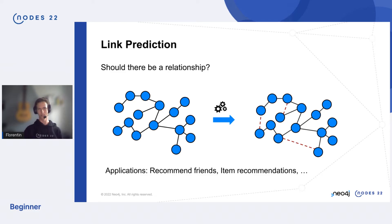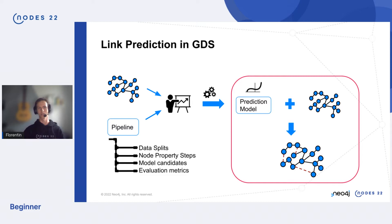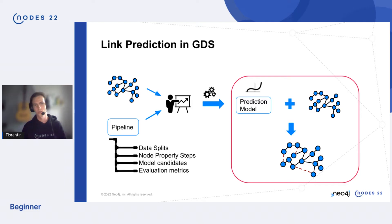In the Graph Data Science context, on the left side we have our input graph. Then we have a pipeline — the GDS concept for defining your machine learning workflow — including how to split your data into train and test sets to evaluate model quality, and where you define model candidates such as logistic regression or random forest. You feed this pipeline configuration into a training process.